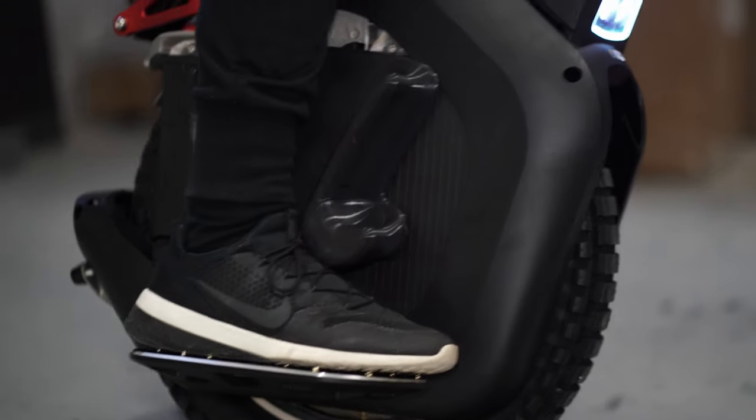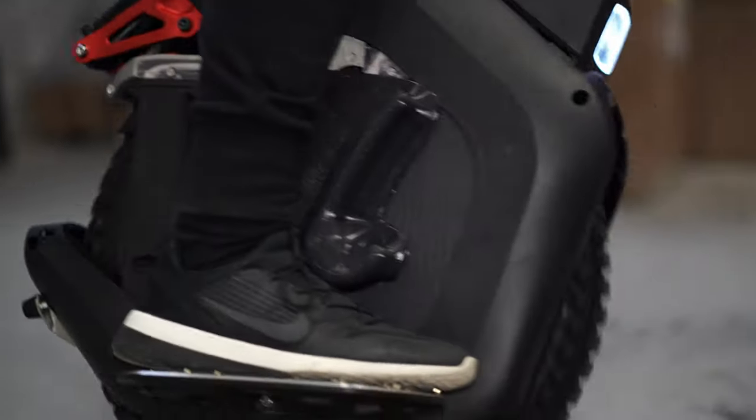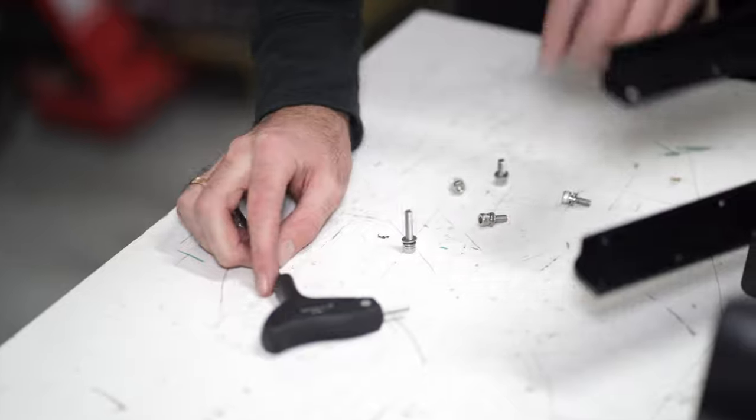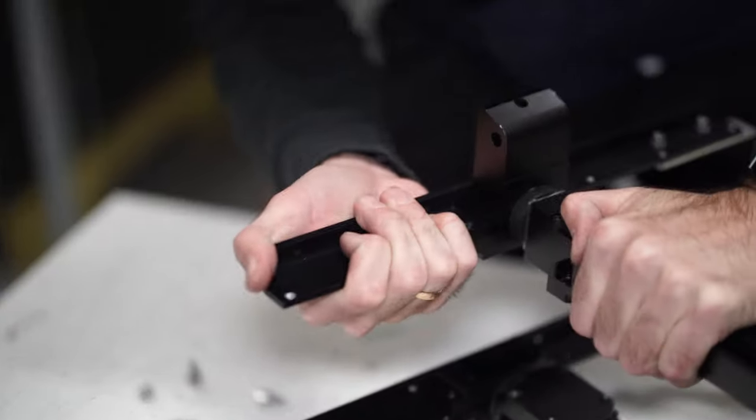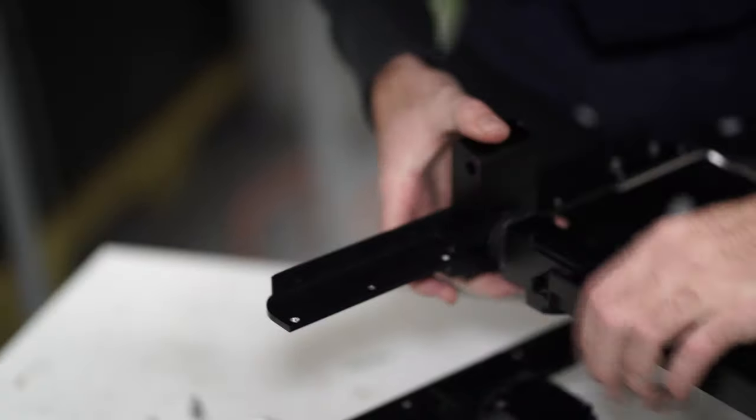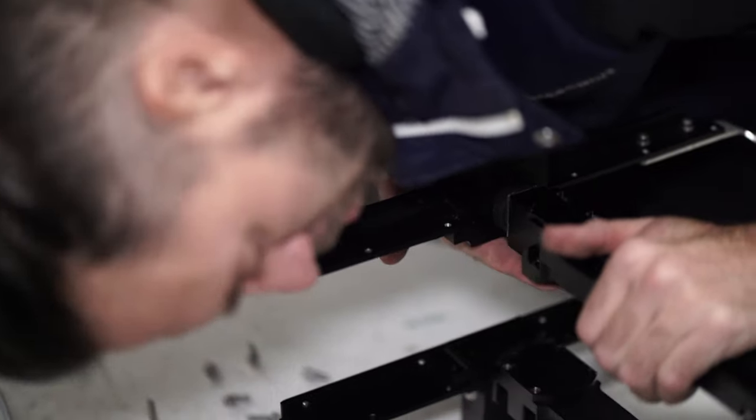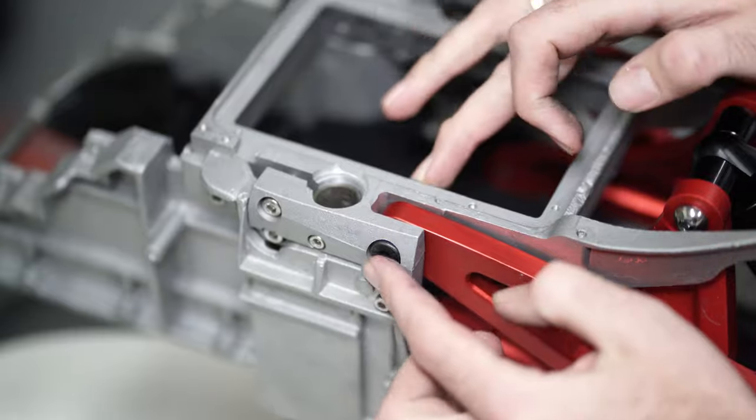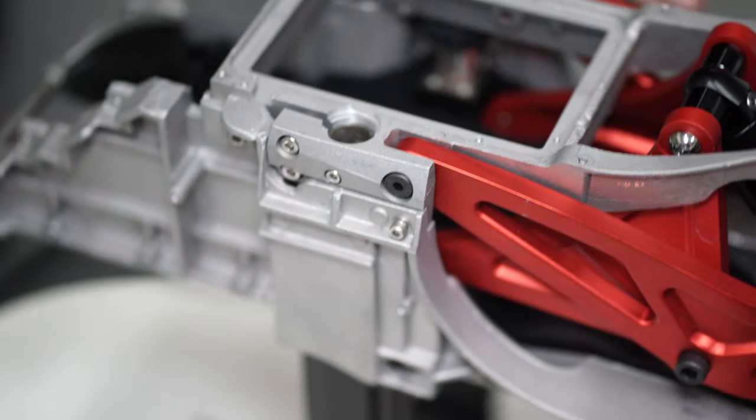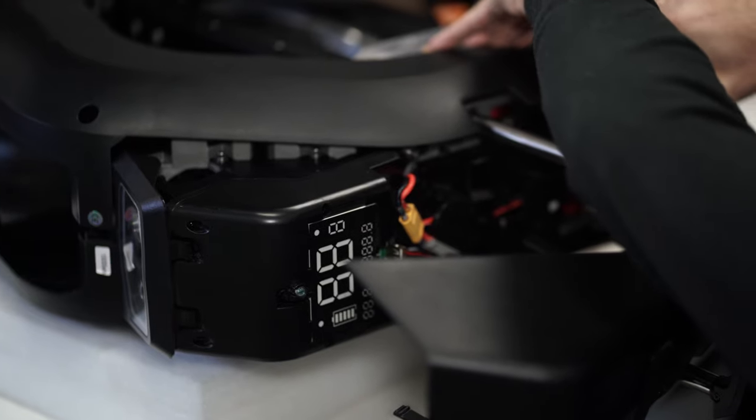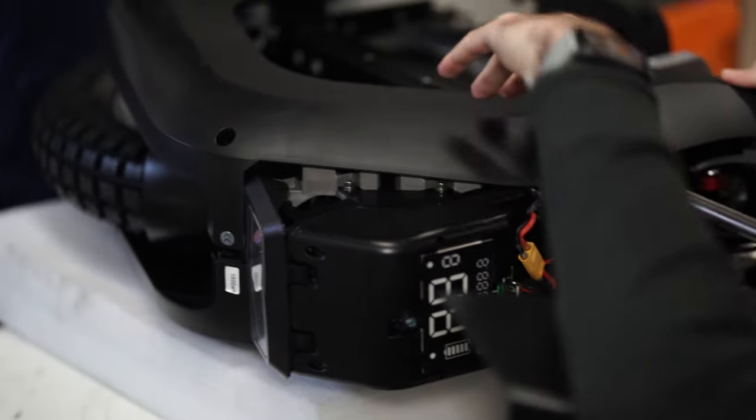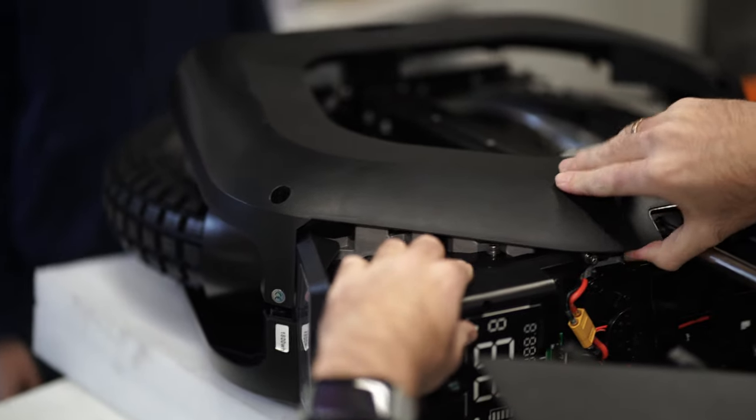All unicycle brands suffer from assembly problems, especially in the first batches. And fortunately, this problem is solved by tightening and fixing bolts, sealing joints. But when it comes to design mistakes, then in order to eliminate them, you need to reinvent the wheel. Unfortunately, the Begoat product consists of such problems.